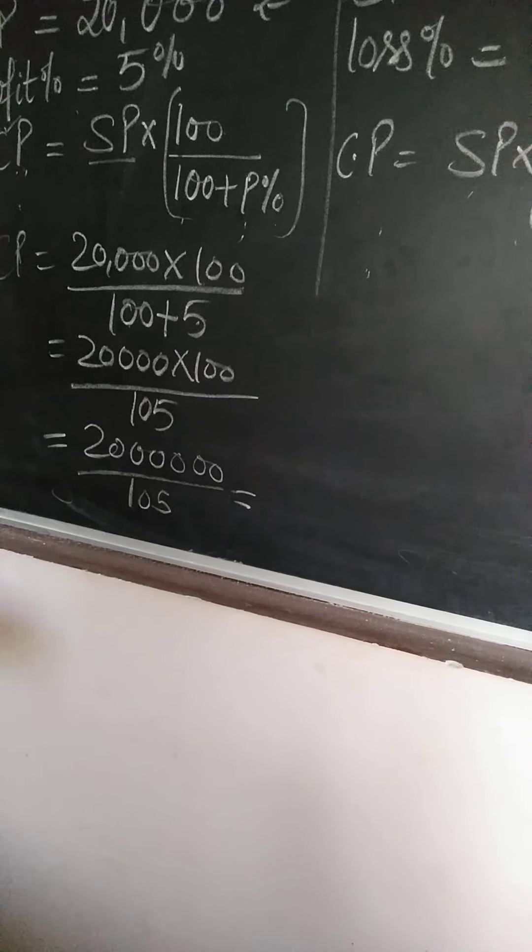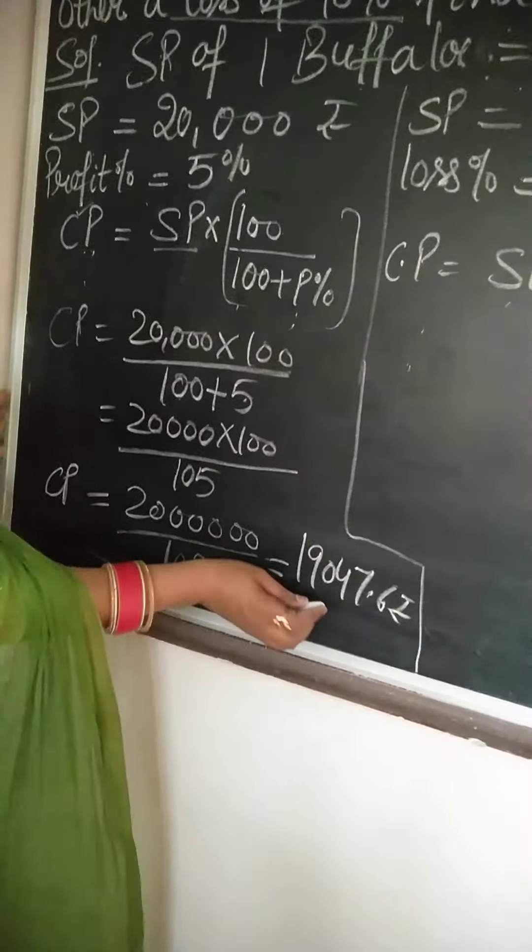After dividing, the answer is 19,047.6 rupees. So the first buffalo's cost price is 19,047.6.